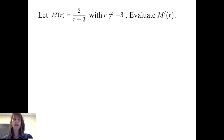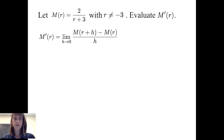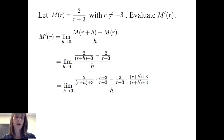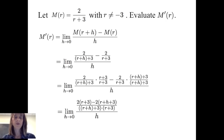Let's consider another example. For the function m evaluated at r, which is 2 divided by r plus 3 where r is not equal to negative 3, let's find its derivative m prime of r. Using the limit definition, m at r plus h minus m at r divided by h as h goes to 0. Evaluating the function at r plus h and r, I find a common denominator of r plus h plus 3 times r plus 3, which simplifies the numerator to 2 times r plus 3 minus 2 times r plus h plus 3, all divided by that common denominator, over h as h goes to 0.